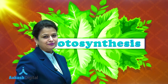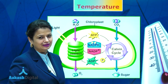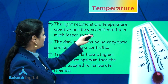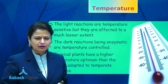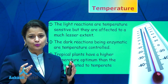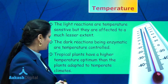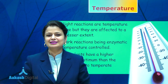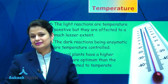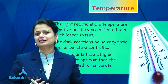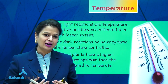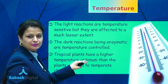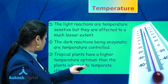Let's talk about another factor which affects the rate of photosynthesis — temperature. The light reactions are temperature sensitive but they are affected to a much lesser extent because in light reactions not many enzymes are involved. If we compare with dark reactions, the dark reactions being enzymatic are temperature controlled. With every 10 degree rise in temperature, the rate of dark reaction increases by a factor of two, because increase in temperature increases the activity of enzymes up to a particular limit.